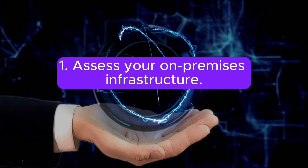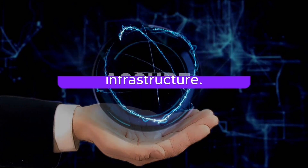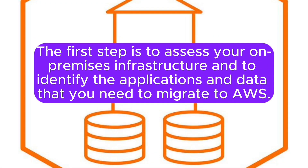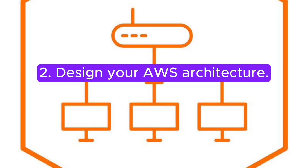Step 1: Assess your on-premises infrastructure. The first step is to assess your on-premises infrastructure and to identify the applications and data that you need to migrate to AWS.